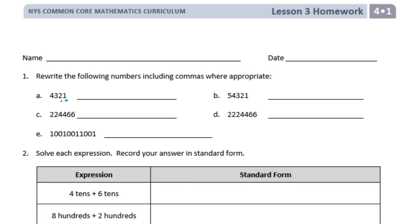I'm going to start at the 1 and count back: 1, 2, 3 — so my comma goes right there. We have 4,321. For B, again I'm going to start at the 1 and count back 3 and put a comma, so 54,321.